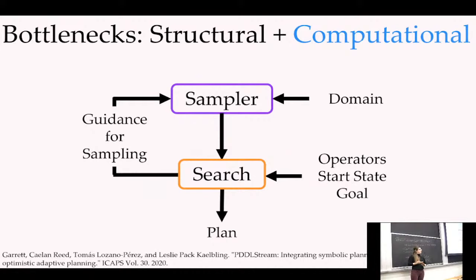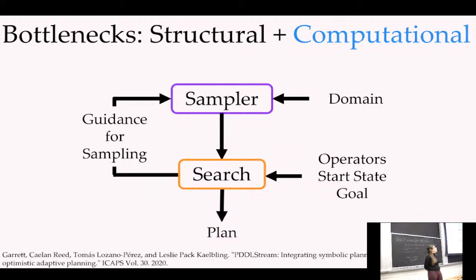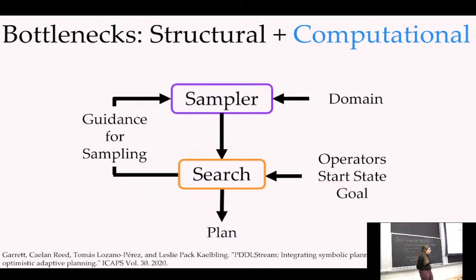For guidance on sampling in the shortest form: PDDLStream uses lazy instantiation — it delays sampling for as long as possible and uses information from the search to be more specific about how it picks those samples. The definition of TAMP as an extension of MMMP using representational efficiency from task planning is accurate — and you not only get representational power from task planning but also computational efficiency, because the representational power is what enables you to leverage that computational efficiency.